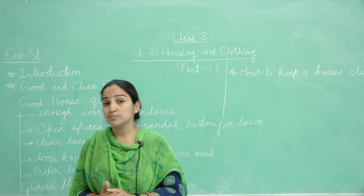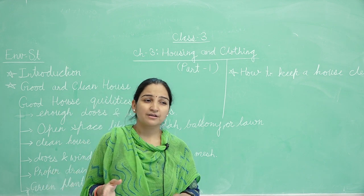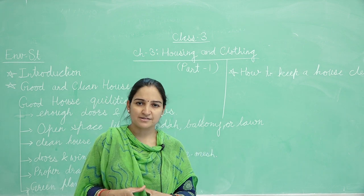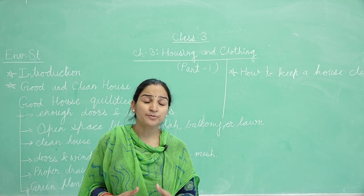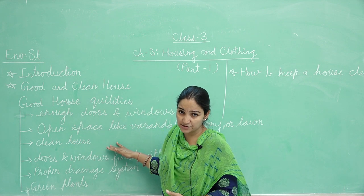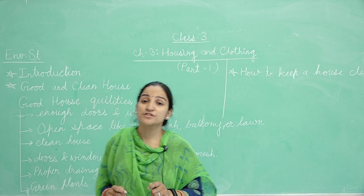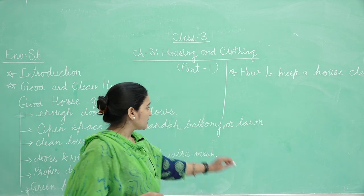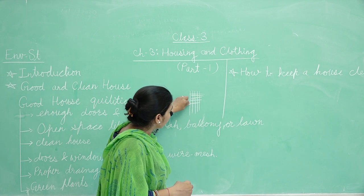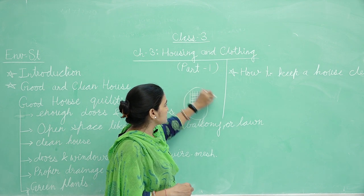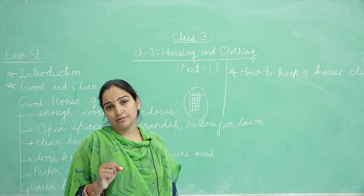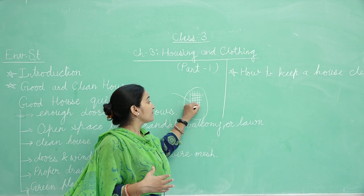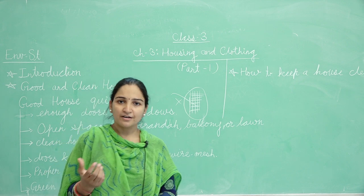Now the clean house. Abhi clean hona bahut zaroori hai. Agar us mein pocha nahi kiya ya dirt aayi aur sweeping nahi ki, toh tarah-tarah ke germs aur bacteria grow honge aur hum bimaar pad sakte hain. So cleanliness is also necessary for a good house. Now doors and windows fitted with a wire mesh — generally aapne dekha hoga ki darwazon aur khidkiyon pe ek jali fit hoti hai. Usse mosquito, bees, flies, house flies ghar mein nahi aayengi aur bimaariyaan kam hongi. So this is also a quality of a good house.